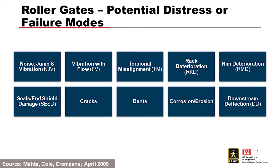Any type of debris damage, impact, or barge impact — if you're changing the actual shape of the gate, you've got to realize these gates are large structural members. If you dent a cylinder, you've just created a sensitive spot where it's going to be more prone to buckling. These are just things to keep in mind.